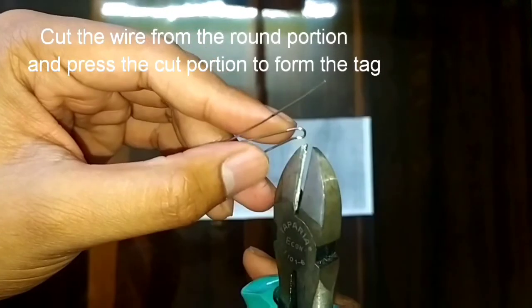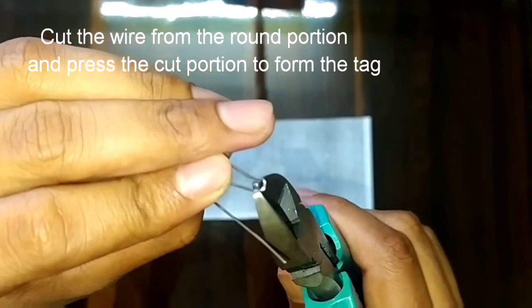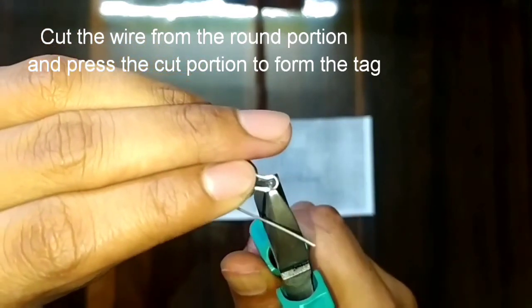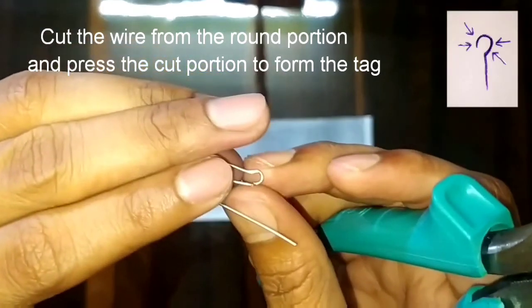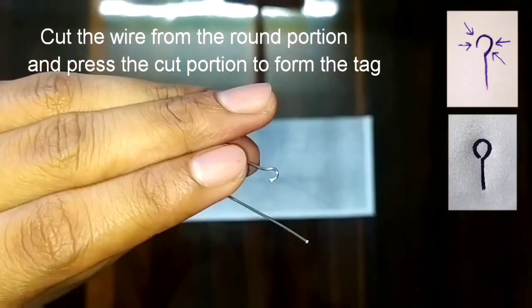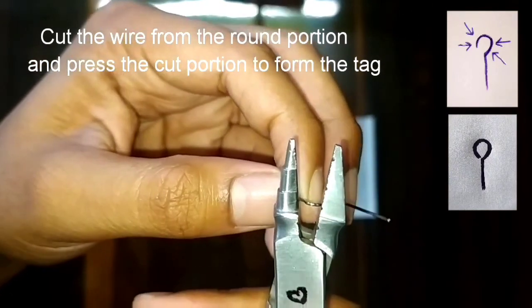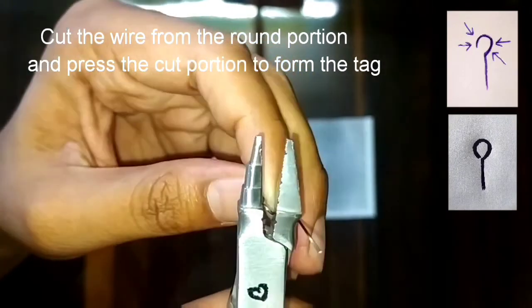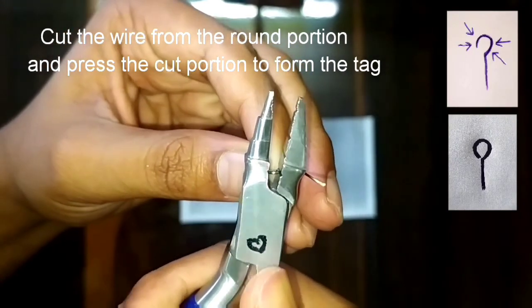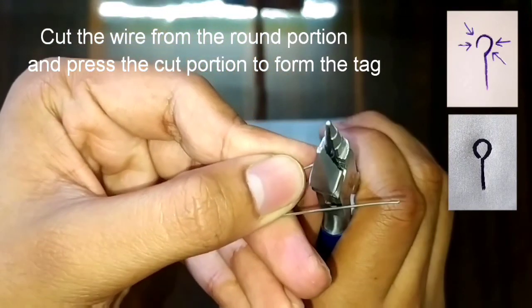After this, we will cut the wire from the round portion in such a way that after the compression of the cut portion, it will form a small tag at that position. We will compress it with the plier. You can see here the small tag is formed.